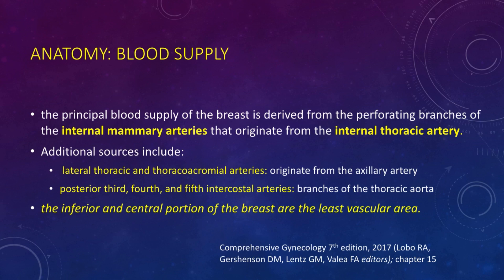Additional sources include the lateral thoracic and thoracoacromial arteries from the axillary artery, and the posterior third, fourth, and fifth intercostal arteries, which are branches of the thoracic aorta. The internal mammary artery sends perforating branches along the first, second, third, and fourth intercostal spaces, crossing the pectoralis major and irrigating the inner half of the breast including the nipple-areolar complex. The intercostal arteries also irrigate the deep surface of the breast, complementing vascularization of the nipple-areolar complex. The inferior and central portions of the breast are the least vascular areas.